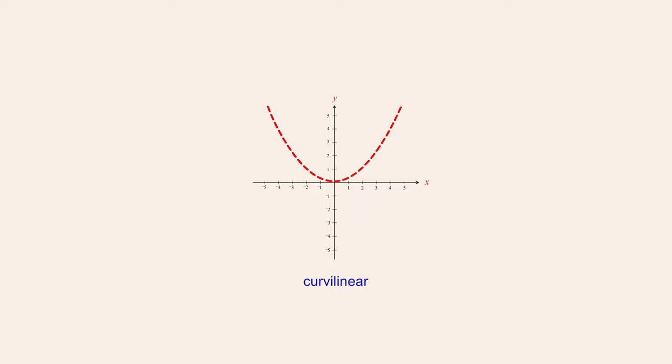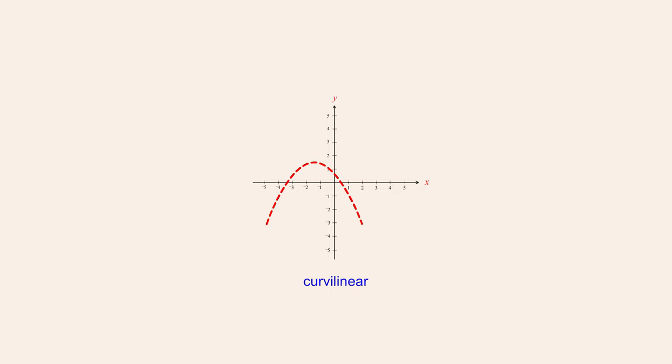For example, curvilinear asymptotes that are parabolic are described by second-degree polynomial functions, and curvilinear asymptotes that are cubic are described by third-degree polynomial functions.